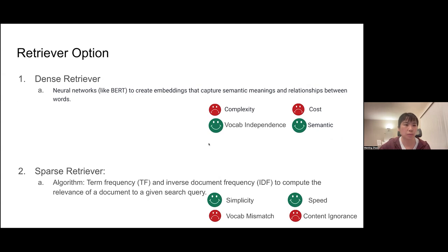The previous result shown is using dense retrieval. Dense retrieval has some advantages, like it's independent of the vocabulary, and it depends on the semantic meaning rather than just the word overlap. However, it's more complex and costs more. And for sparse retrieval, it uses term frequency and inverse document frequency to compute the relevance of the document to a given search query. Compared to dense retrieval, it's more simplified and the speed is pretty fast. It also has some disadvantages. It depends on the exact overlapping of the wording. But due to its fast speed, we also want to show some results if we're applying this pipeline using sparse retrieval.